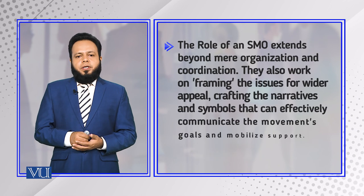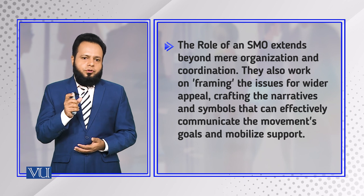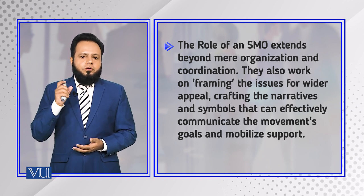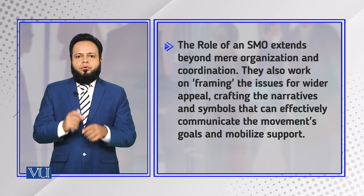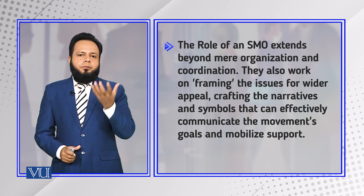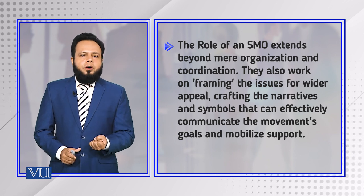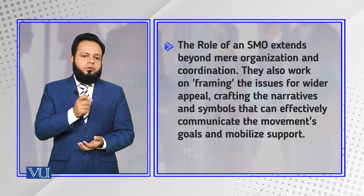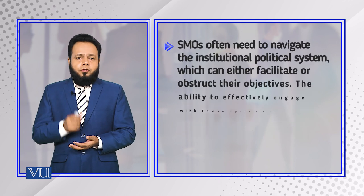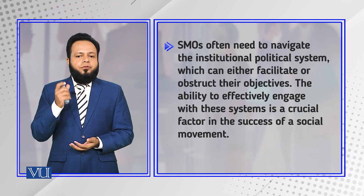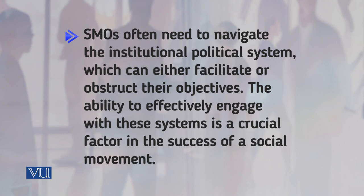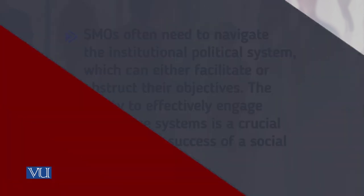The role of a social movement extends beyond mere organization and coordination. They also work on framing the issues — for example, what kind of symbols and language should be used to motivate people to become part of that social movement. Social movements often need to navigate institutional political systems, which can either facilitate or obstruct their objectives. The ability to effectively engage with these systems is a crucial factor in the success of a social movement.